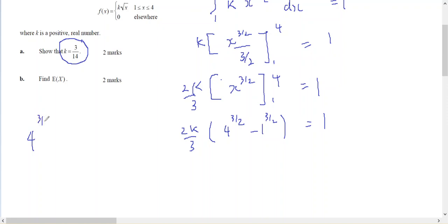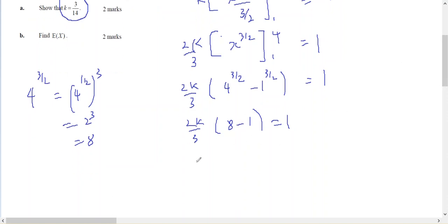Now, 4 to the 3 on 2 is 4 to the half cubed, which is the square root of 4, which is 2 cubed, which is 8. So 2k on 3, 8 minus 1, equals 1. 7 times 2, 14k on 3 equals 1.